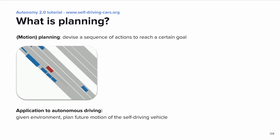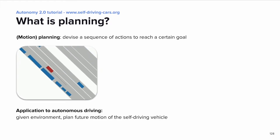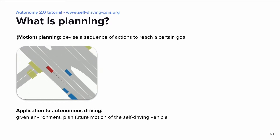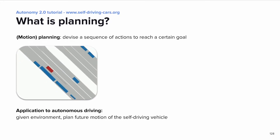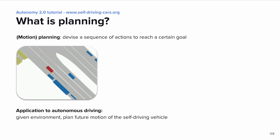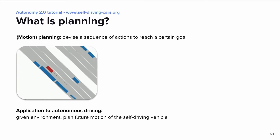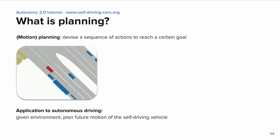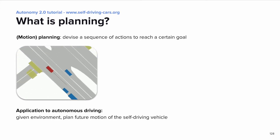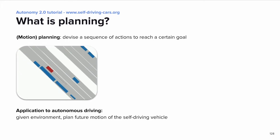Let's start with the basic question: what actually is planning? Often you see it defined as something like devising a sequence of actions to reach a certain goal. Applied to autonomous driving, we usually interpret it as: given the current state of the environment, plan the future motion of the self-driving vehicle. In the clip here, you can see an actual trained planner. The planner takes the scene representation as input and outputs the future motion of the ego vehicle, shown in red, in the form of a trajectory spanning the next 1.2 seconds.